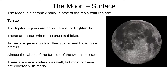Looking up at a full Moon, you can clearly see light and dark patches. Some cultures see the shape of a man, a woman or a face in these patches. The light patches are called Terrae, singular Terra, or Highlands. The crust is thicker here. Terrae are older than Maria, which we'll look at next, and so they have accumulated more craters. The far side of the Moon is almost entirely Terrae.